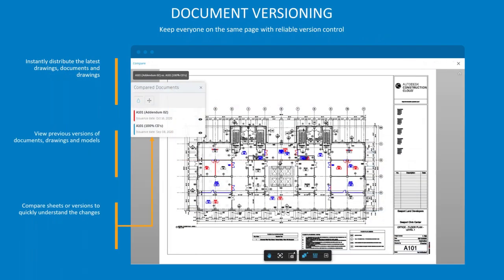It's also about versioning — anytime you're in the system, you always know what the current version is. When you're printing something, the second it's printed it's already outdated because who knows how many versions are going to come after that. Even if you finish hitting the print button, version two may already be out. With this electronic version, everything's constant — we know that everyone is looking at the most up-to-date piece of information, but we have access to all previous versions if we need it.